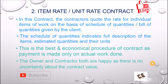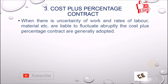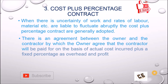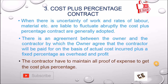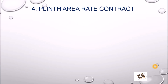The third type is the cost plus percentage contract. This is used when there is uncertainty of work and rates of labor, material, etc. are liable to fluctuate abruptly. There is an agreement between the owner and the contractor by which the owner agrees to pay the contractor on the basis of actual cost incurred, plus a fixed percentage as overhead and profit. The contractor must maintain all proof of expenses to receive payment.